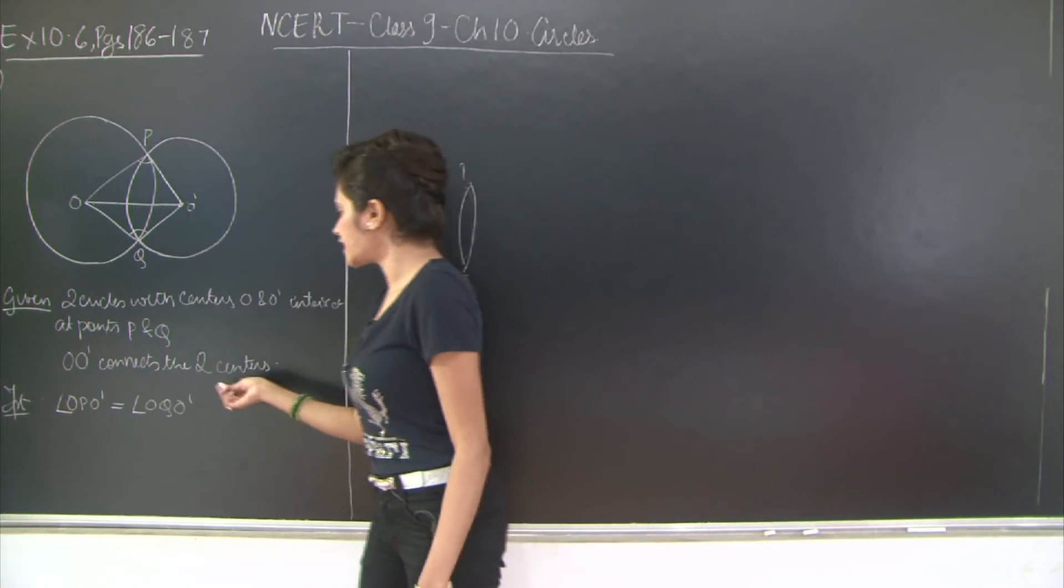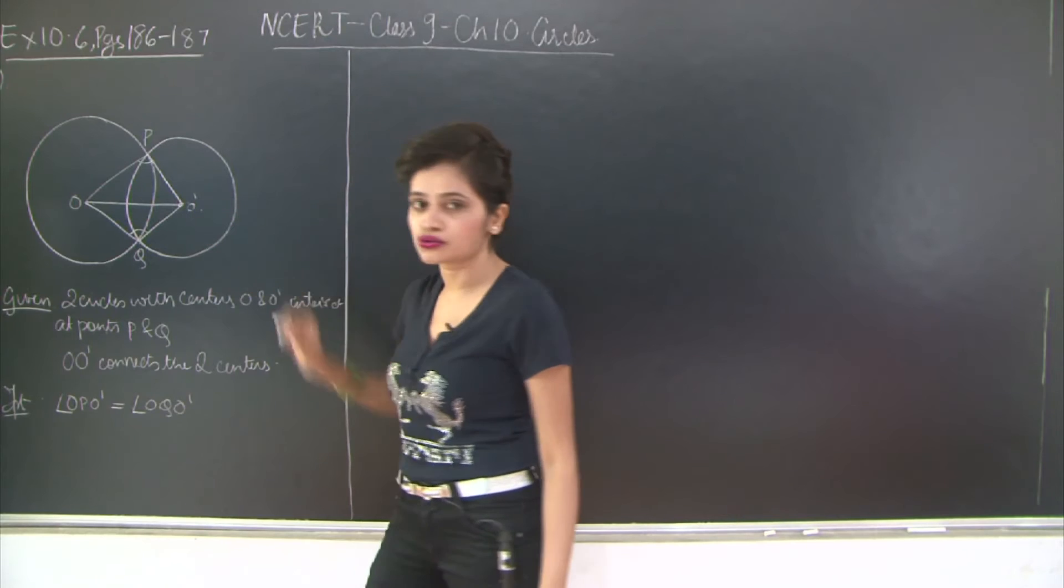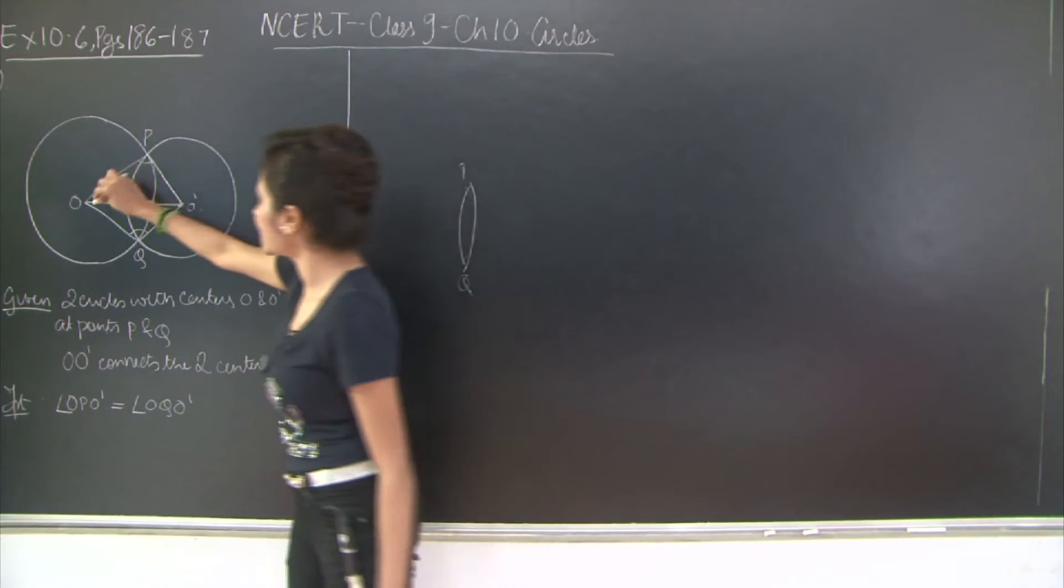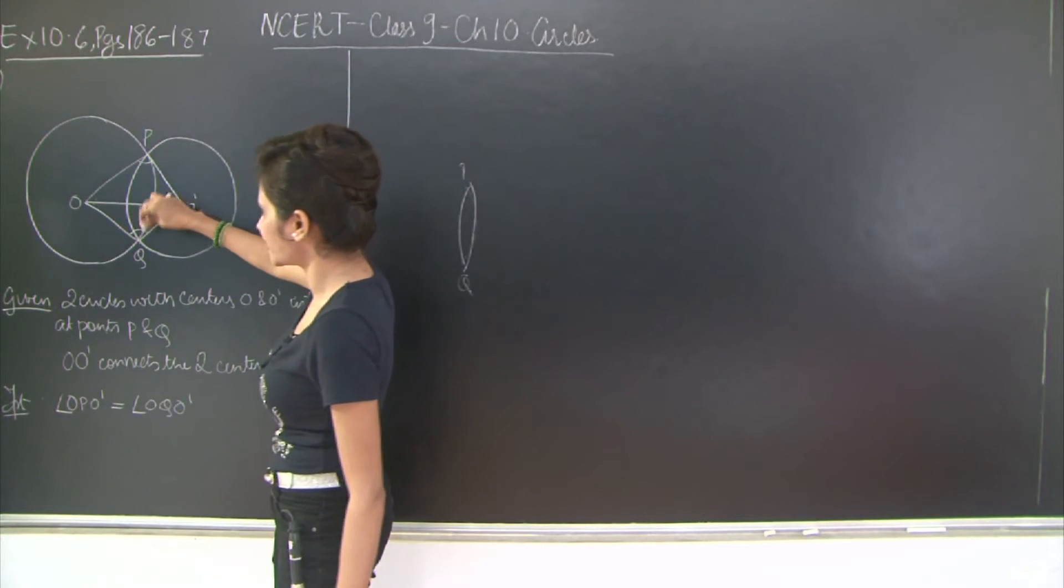O, O' connects the two centres. So O, O' this line out here it connects the two centres. I need to prove that this angle O, P, O' that is this angle is equal to this angle O, Q, O'.